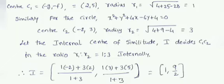For circle C₂: x² + y² + 4x − 6y + 4 = 0, compare with x² + y² + 2gx + 2fy + c = 0. We get 2g = 4, so g₂ = 2; 2f = −6, so f₂ = −3; and c₂ = 4. Center C₂ = (−2, 3). Radius r₂ = √(4 + 9 − 4) = √9 = 3.